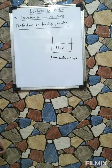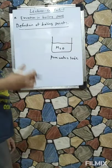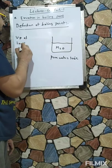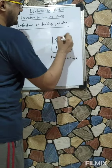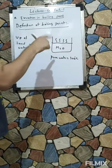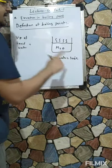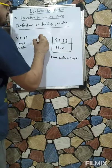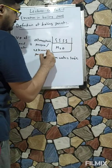On Earth's surface, water boils at 100 degrees Celsius. When I warm up water, the vapour pressure of liquid water increases. We know that water boils at 100 degrees Celsius — at that temperature, the vapour pressure of liquid water equals the atmospheric pressure, the external pressure.